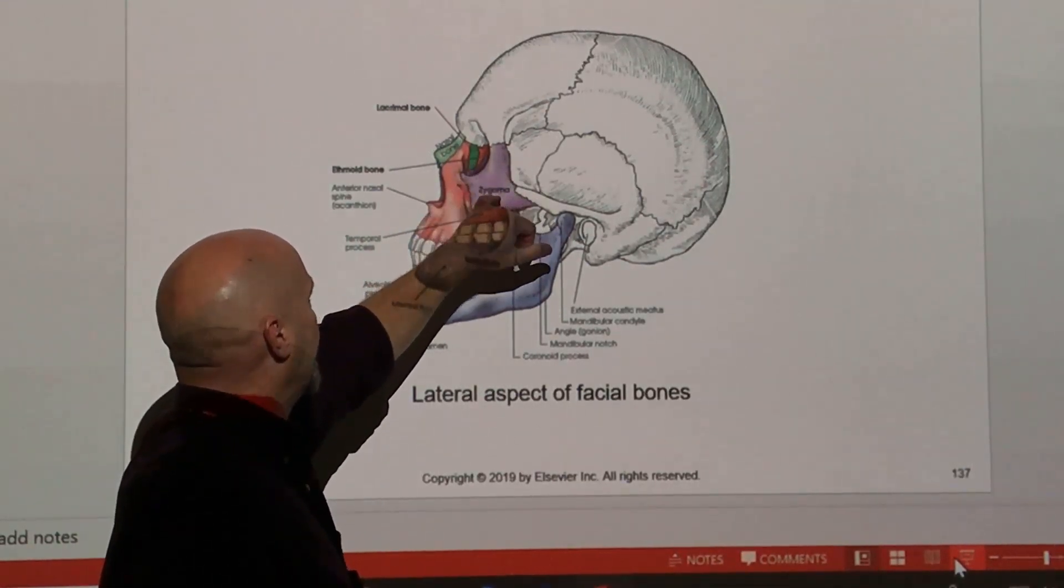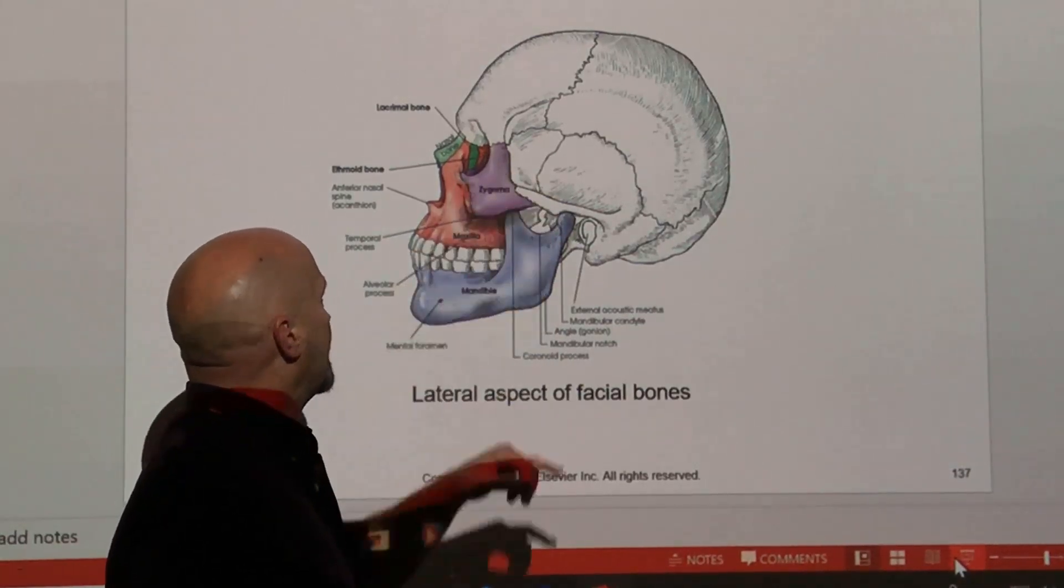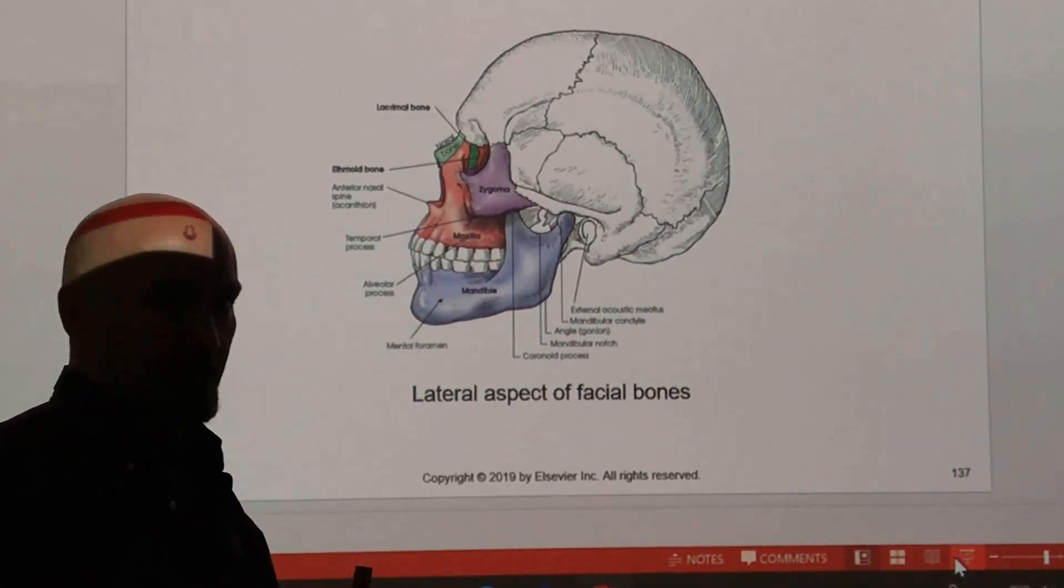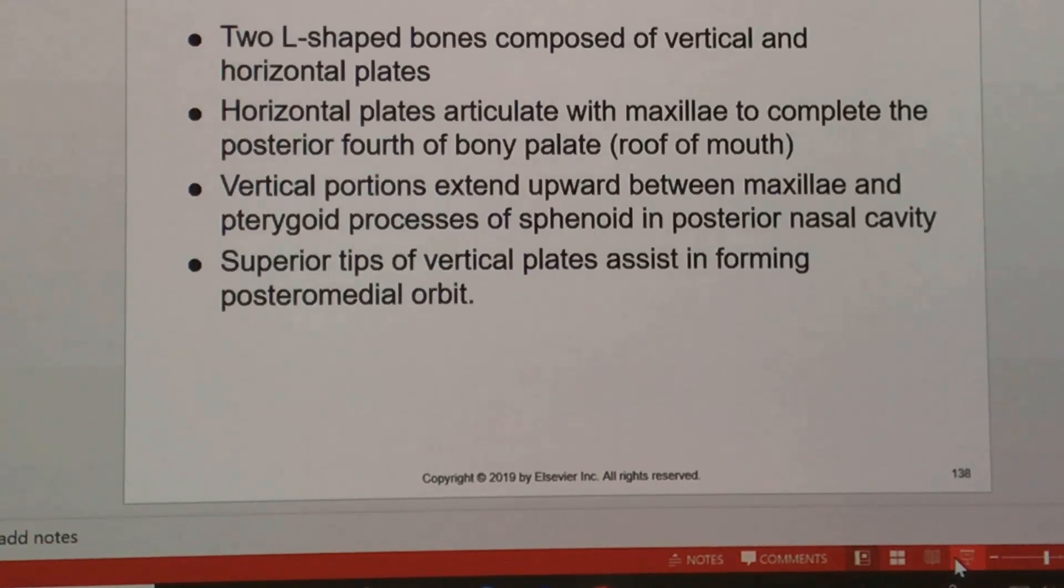The dark green bone right there is the lacrimal bone, then the ethmoid bone is that reddish appearing bone. Palatine bones are L-shaped, even though you don't see the L. They've got a vertical and horizontal portion. The horizontal plate articulates with the maxilla to complete the posterior portion of the roof of the mouth, that's the bony hard palate.